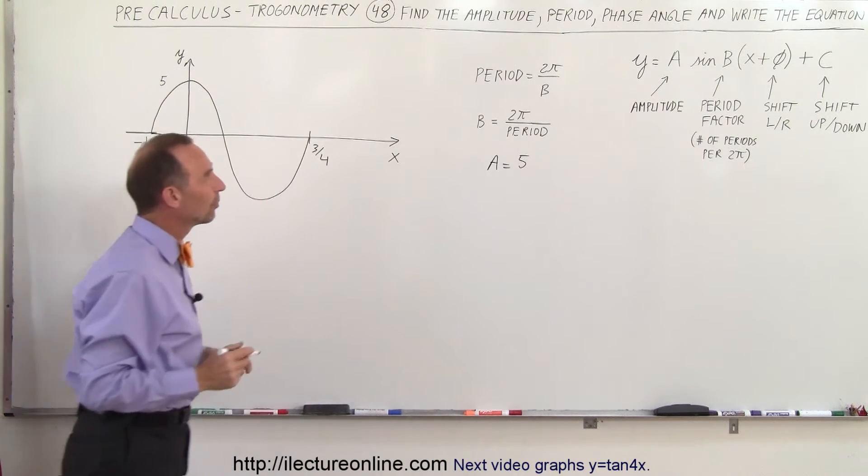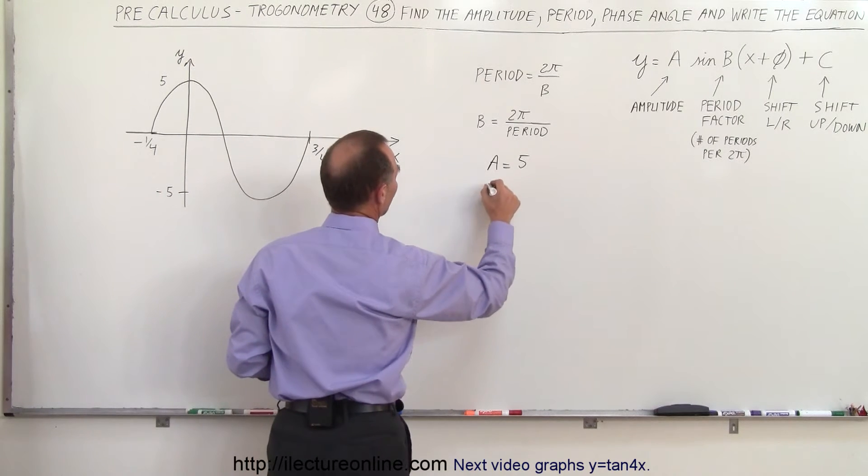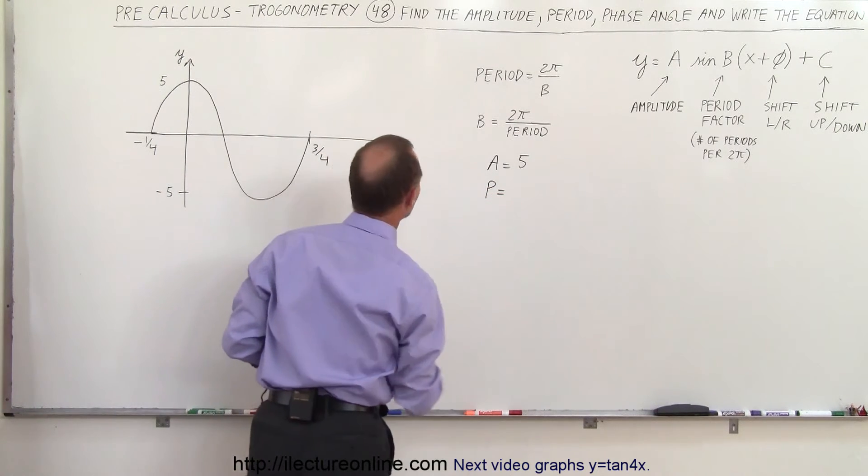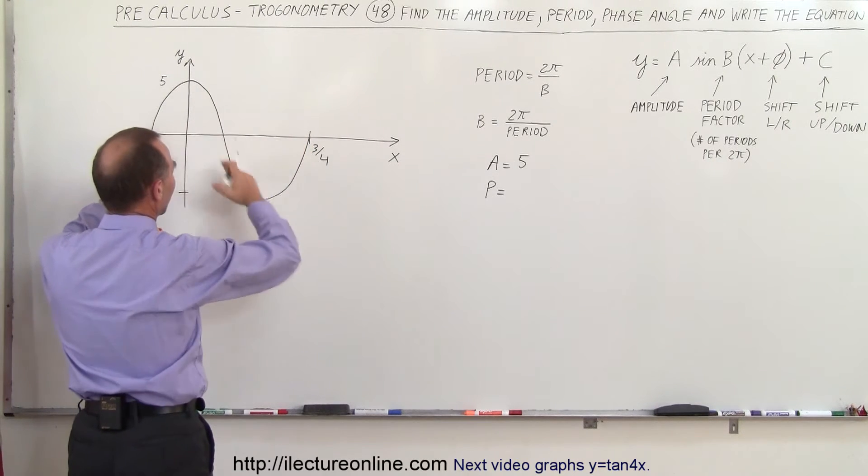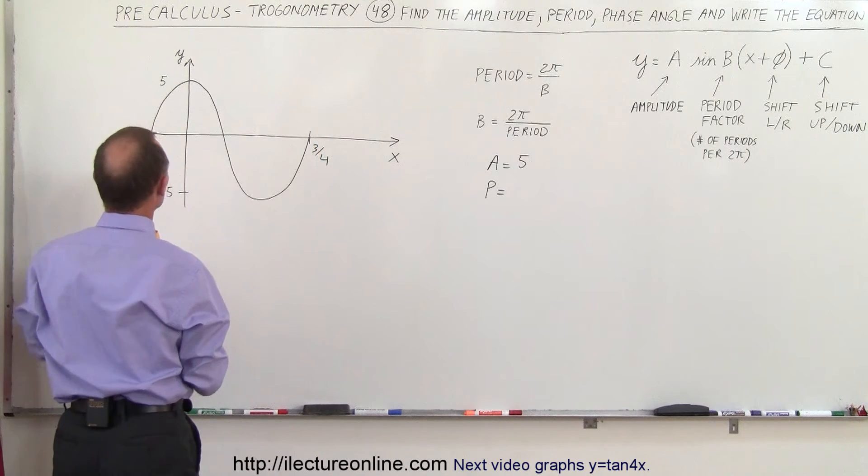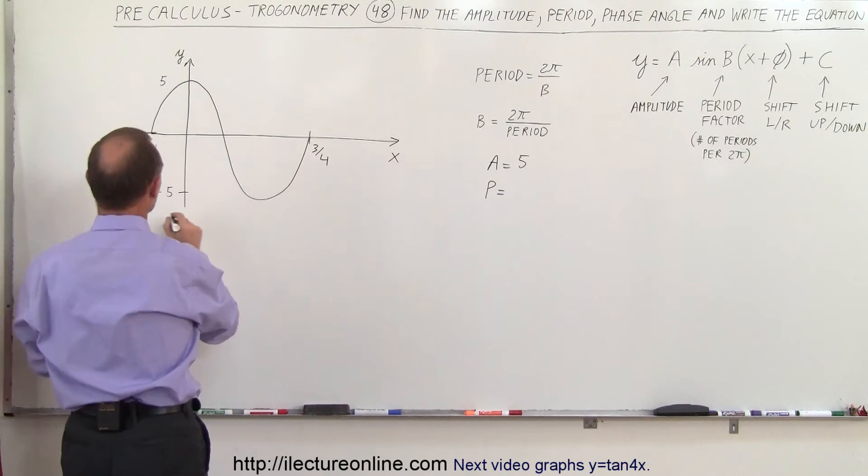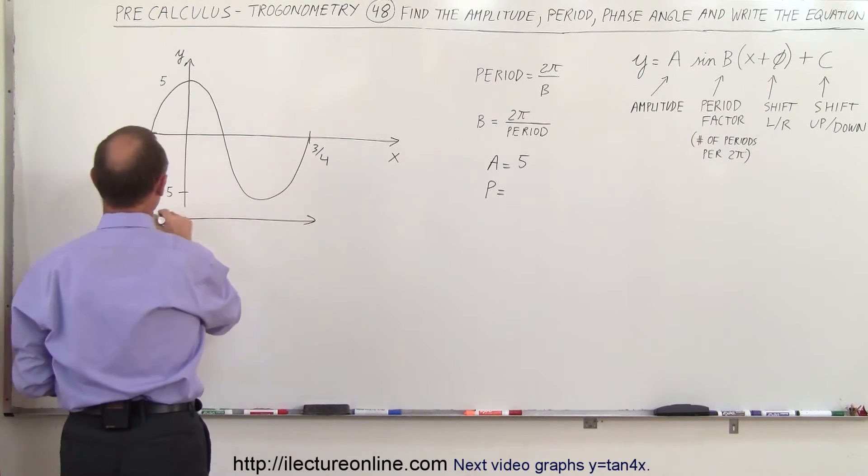Now what about the period? The period P is equal to the distance from the beginning to the end of the cycle, one single period of the function. From minus a quarter to plus three quarters, the period from there to there is equal to one.